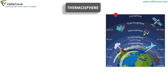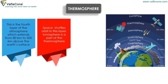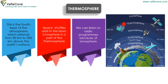Thermosphere is the fourth layer of the atmosphere, which extends from 80 kilometers to 500 kilometers above the earth's surface. Space shuttles orbit in this layer. The ionosphere is a part of the thermosphere, and we can listen to radio programs because of the ionosphere.